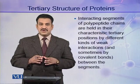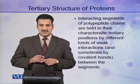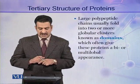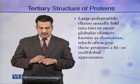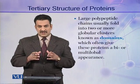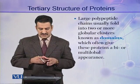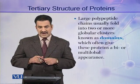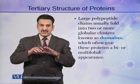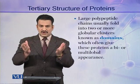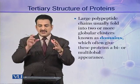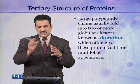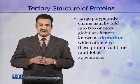In this way, a stable three-dimensional structure is formed, which is the tertiary structure of proteins. Some very large polypeptide chains usually fold into two or more globular clusters, and these clusters are called domains. The presence of these domains often gives these proteins a bi- or multi-lobal appearance. In a fully folded protein molecule, there may be two or more smaller clusters of polypeptide chains, and these smaller clusters are called domains.